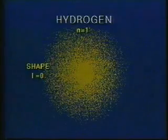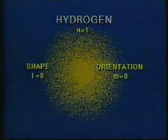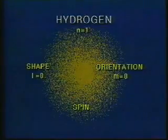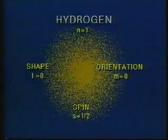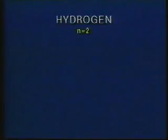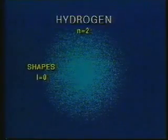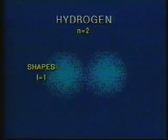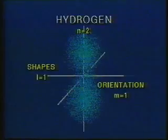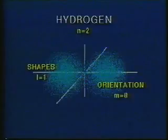Since the shape is spherical, it can have only one orientation in space, described by the quantum number M equals zero. Hydrogen with only one electron can only ever have one spin, S equals one half. When N equals two, two shapes are possible: L equals zero and L equals one. This second shape can have several orientations in space: M equals one, M equals zero, and M equals minus one.